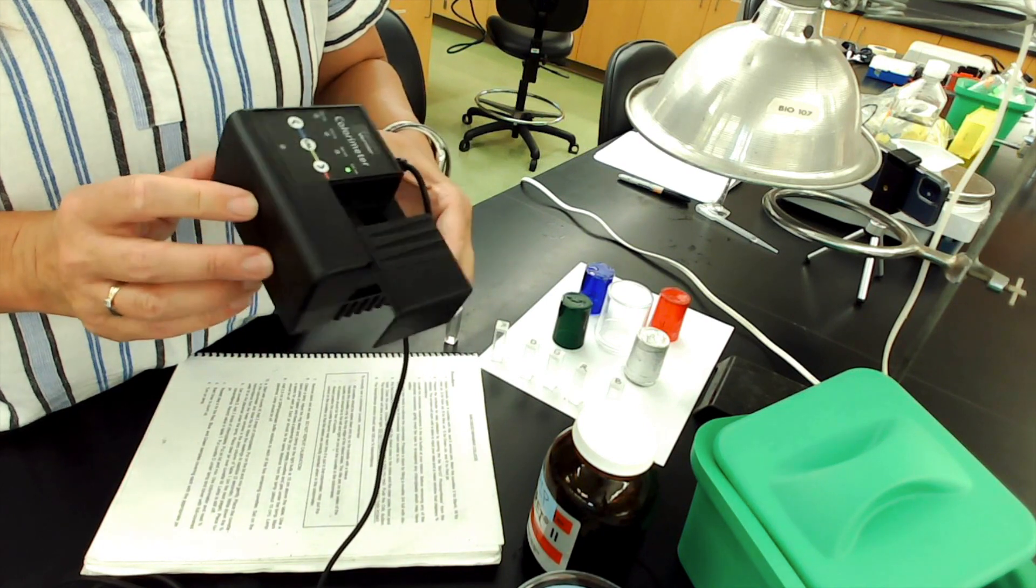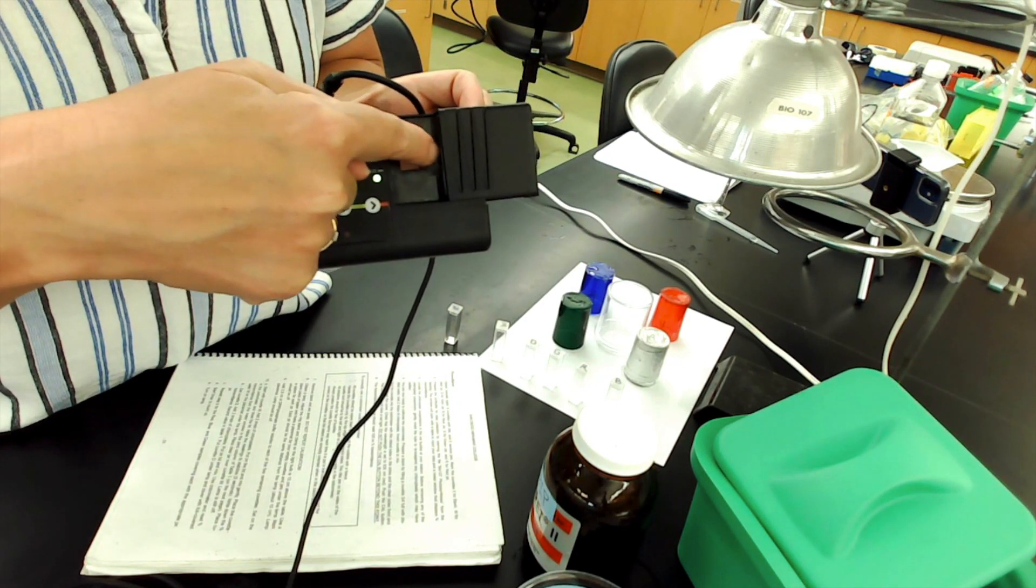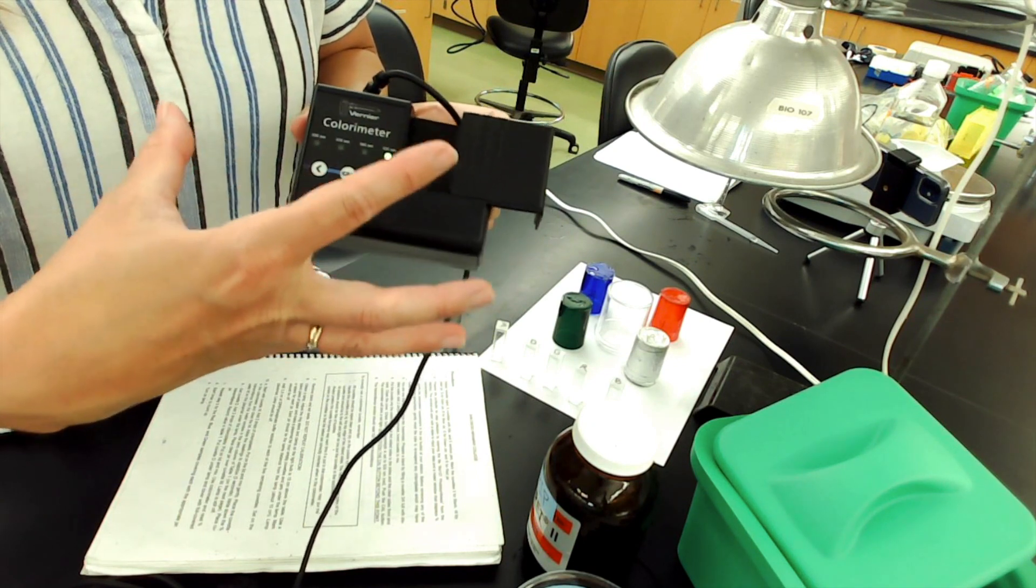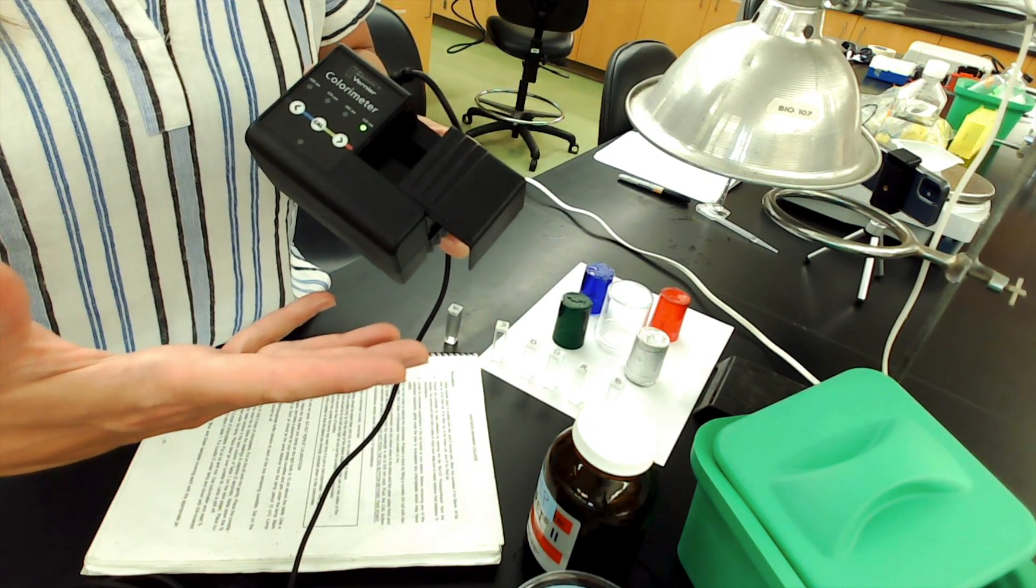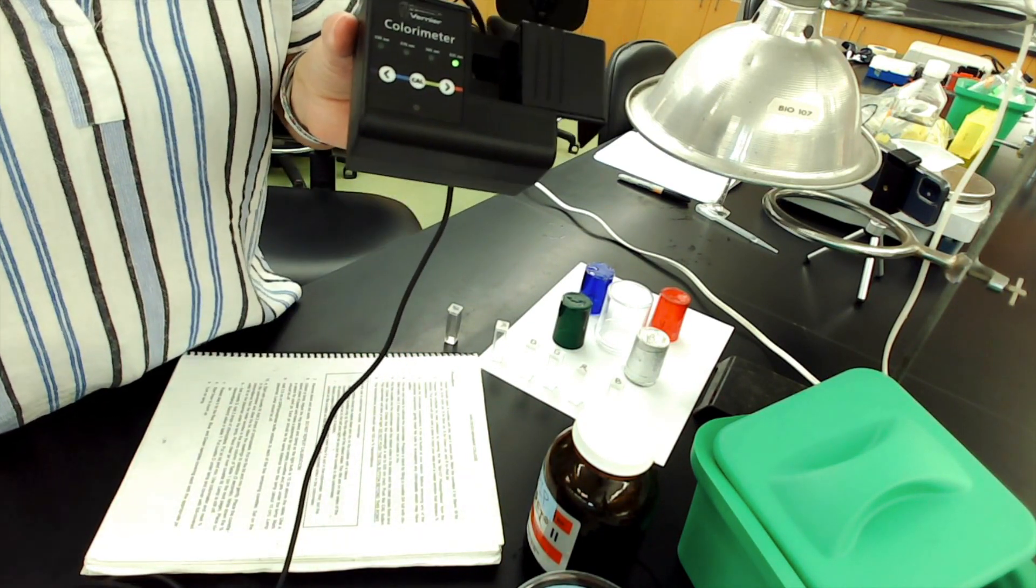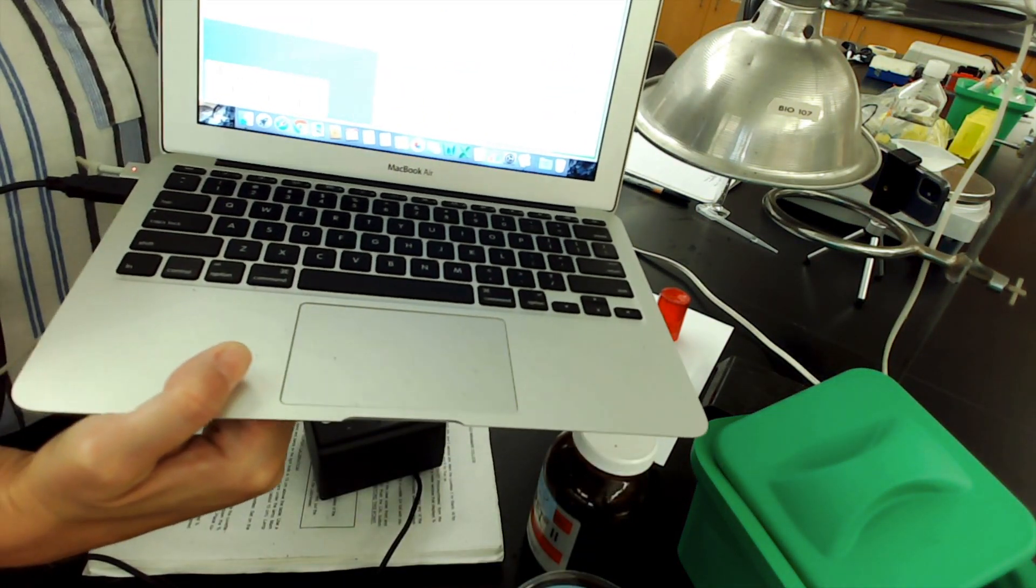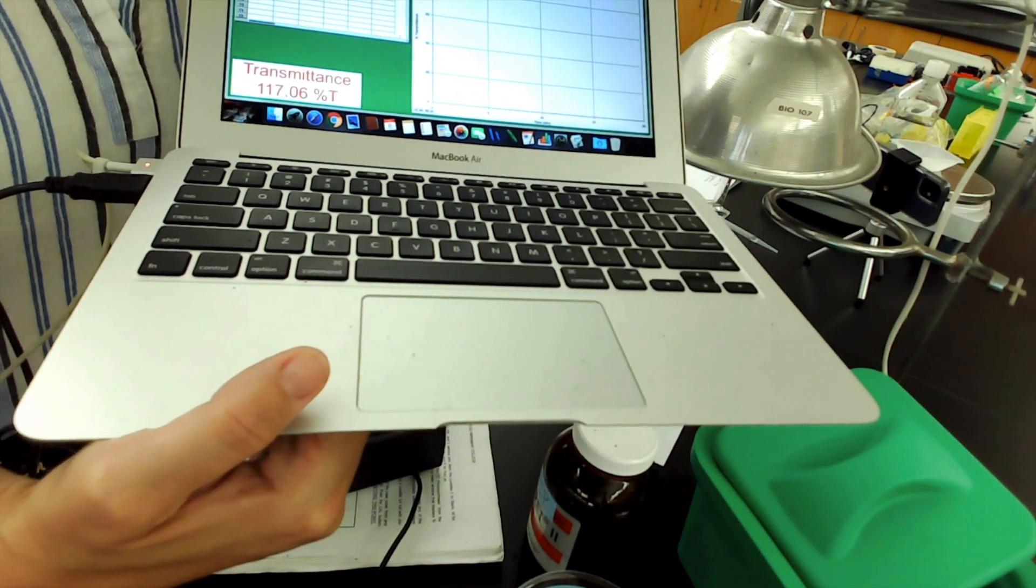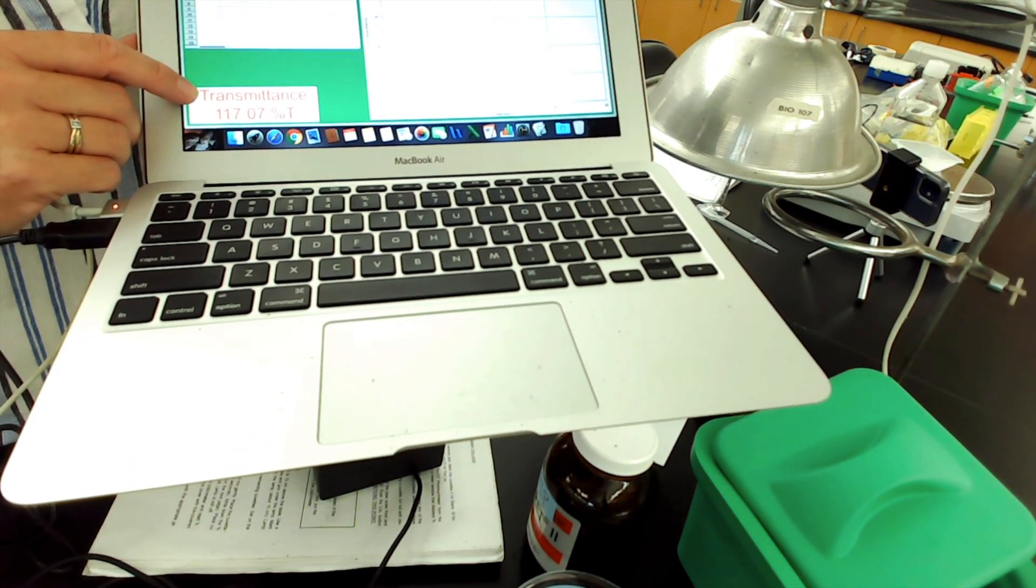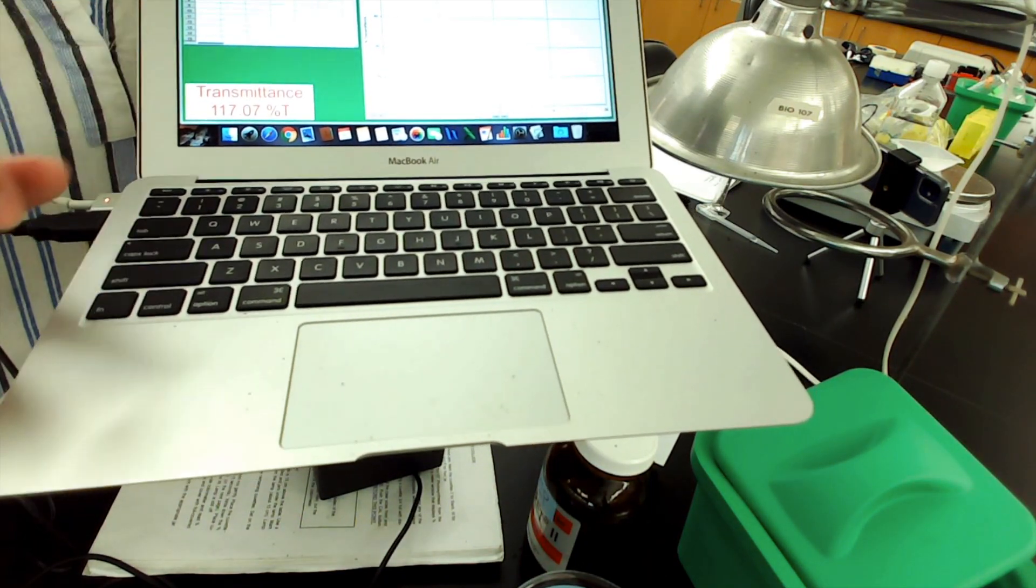The colorimeter shoots a little beam of light through that little hole that bounces back again, which this machine can interpret how much light passes through the solution, how much doesn't, and it'll send all that information to the computer as a number. If you can see at the bottom here where it says transmittance, that'll tell us how much light is actually passing through that solution.